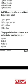Question 5: The perpendicular distance between the roots and crest of a thread is termed as — the answer is C — depth. The perpendicular distance between crest and root of a thread is called the depth of the thread.